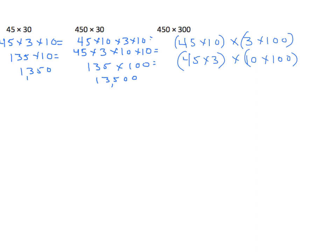And again, we can solve the first pair of factors. 45 times 3 is 135 times 10 times 100 is 1,000. And 135 times 1,000 is 135,000. Those are a few different approaches.